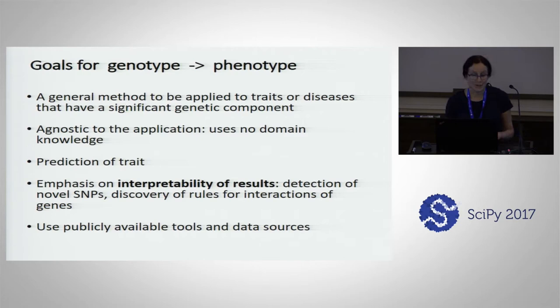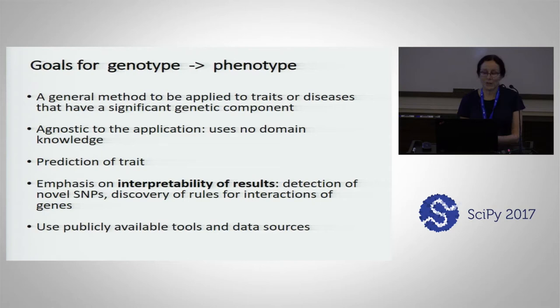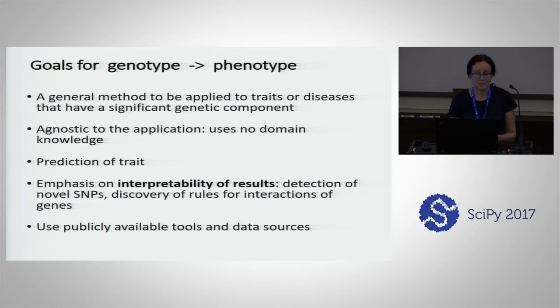Prediction of the trait is one goal, but another goal is interpretability of results, because we want to learn something about the domain area — maybe detect some novel SNPs that are not known, or discover rules of interactions for genes, how they interact in a polygenic disease or a polygenic trait. Another goal of this project was to use publicly available tools and data sources.